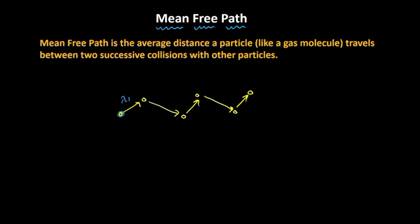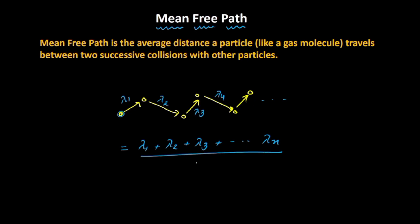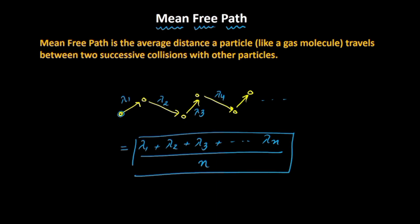For this particular molecule, it keeps on interacting with adjacent molecules — this would be lambda 1, this would be lambda 2, this would be lambda 3, this would be lambda 4 and so on. If we take the average of all these distances — that is lambda 1 plus lambda 2 plus lambda 3 till lambda n divided by n — this is what is called mean free path: the average distance a gas molecule travels between two successive collisions.